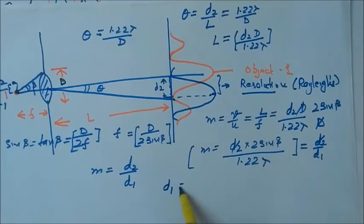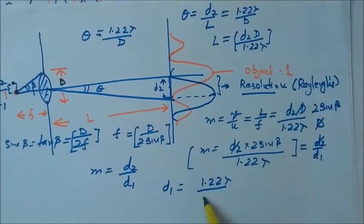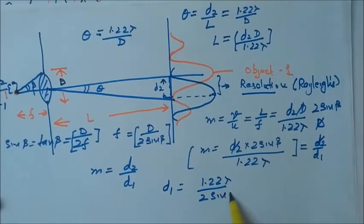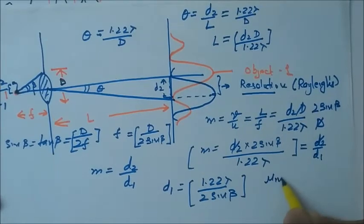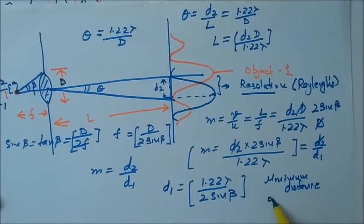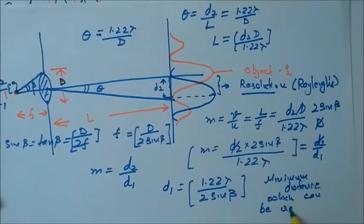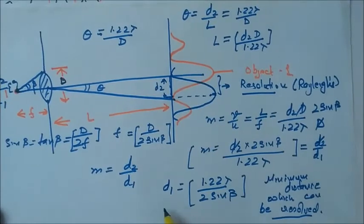By this we get D1 equals 1.22 lambda upon twice sin beta. This is the minimum distance which can be resolved by the microscope.